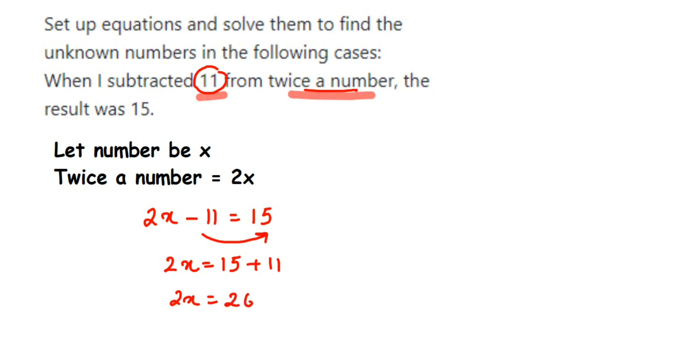Therefore, now next we're going to transpose 2 to the other side. From here, 2 is in multiplication. When you transpose, it comes in division. So 26 divided by 2—cancel it—2 ones are 2, and 2 thirteens are 26. Therefore, x is equal to 13. That's it. I hope this question is clear.